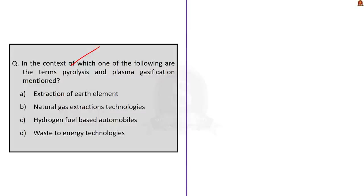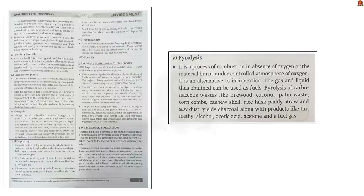When you look at this question from outside, it looks like a tough question, but it is not. It is a conceptual scientific question. Moreover, this question is directly asked from the Shankar IAS Academy Environment Book, so these kinds of questions are a treasure. You have to maximize your score by getting these questions correct. Many aspirants miss the cutoff by 0.5 marks, so if an opportunity like this arises, make sure you get it right through practice and constant revision.